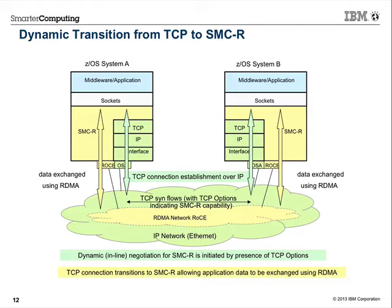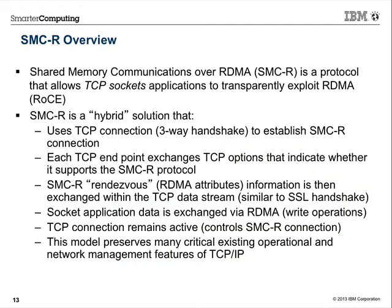The TCP/IP connection remains active and is the controlling point for the RDMA connection. If anything changes in policy or filters that would terminate the TCP connection, the RDMA connection also terminates. The TCP/IP connection provides state information to endpoints and management tools. TCP applications exploit this transparently — it's a hybrid solution using both TCP/IP for management and RDMA for data exchange.